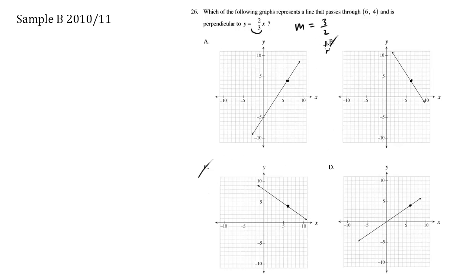A slope of 3 over 2 is approximately 1.5, which means that it's steeper than 45 degrees. So the only possible answer is A.